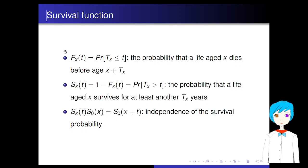We have the important assumption, which is the independence of the survival probability. That means if a life already survives for x years, then its survival probability for at least another t years is independent of its previous state. That means S_x(t) times S_0(x) equals S_0(x plus t).